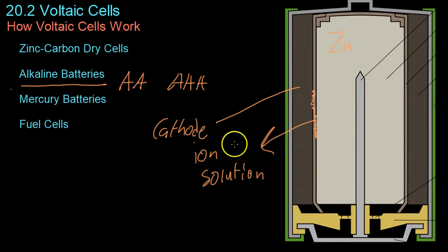The cathode is usually made of some sort of manganese oxide. Then the current flows, this rod in here picks up the current and conducts it out to the circuit where it can be used for powering whatever.